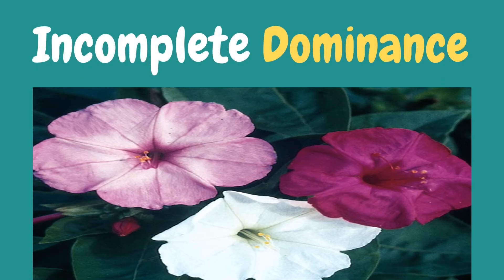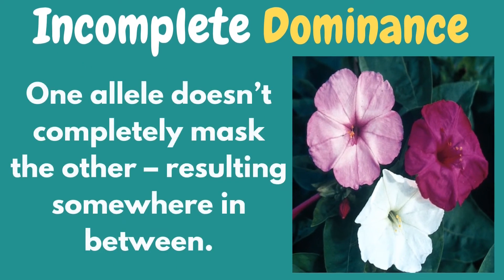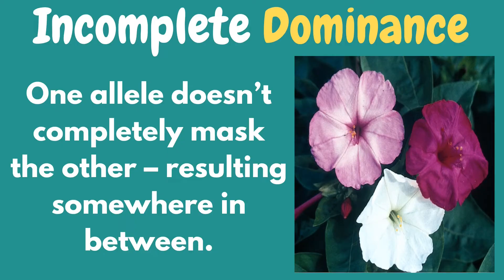What is incomplete dominance? One allele doesn't completely mask the other, resulting in something somewhere in between. It only means that the dominant allele did not completely mask or cover the other allele, resulting in a combination of both alleles.